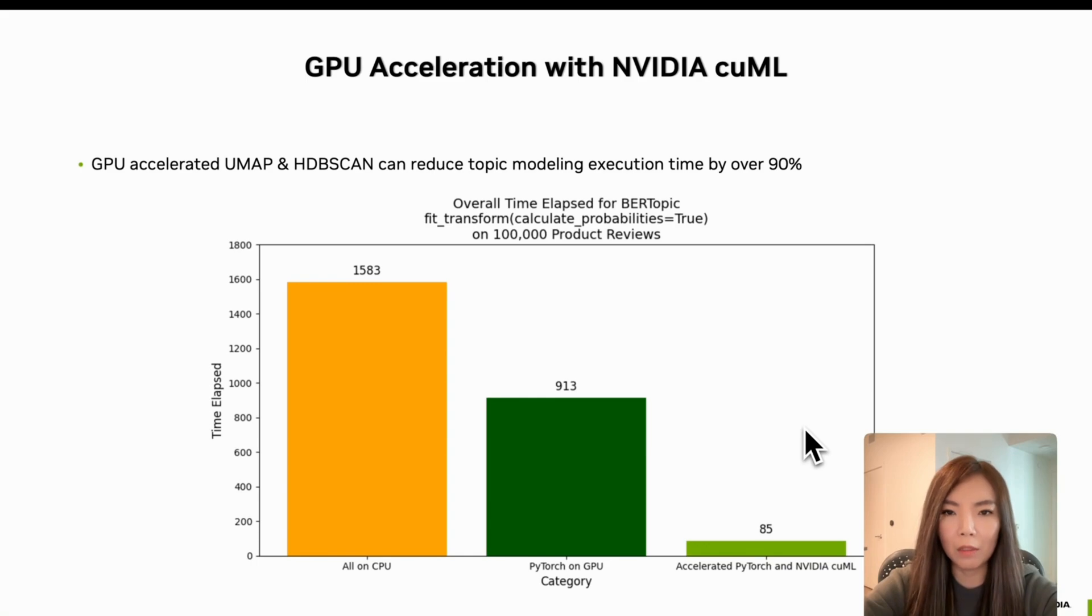So if you are working with large-scale text data and care about both model quality and throughput, GPU acceleration with cuML offers massive gains. This allows new possibilities for real-time topic modeling, faster experimentation, and scalability to millions of documents.